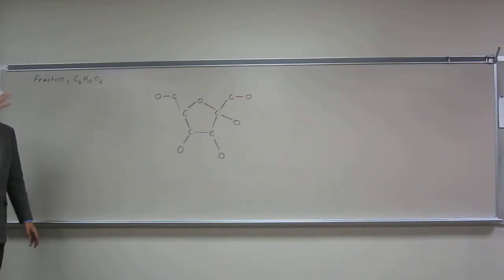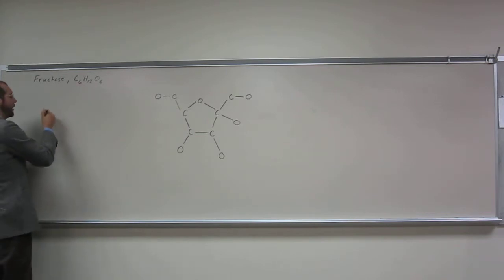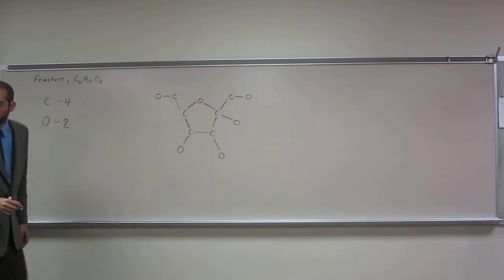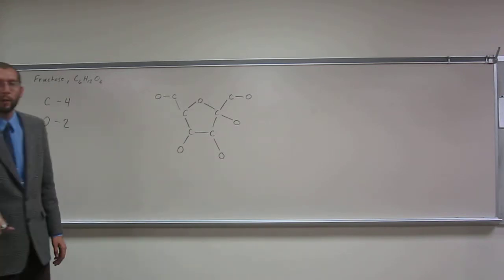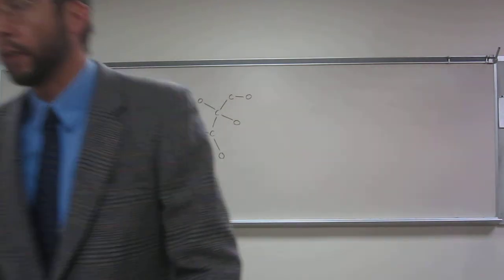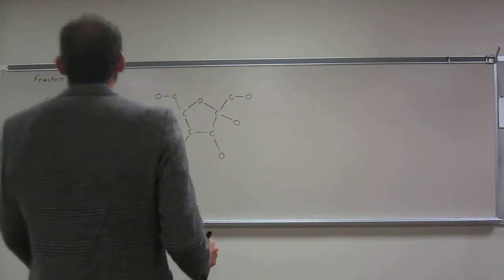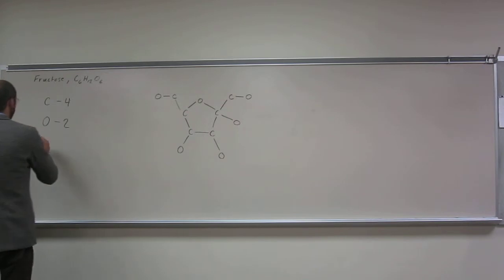So if you recall what the problem told us, and you'll learn this eventually later, carbon likes to make four bonds. Oxygen likes to make two bonds. It says hydrogen likes to make one bond.